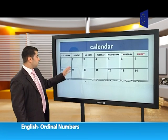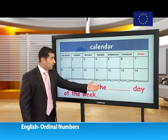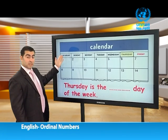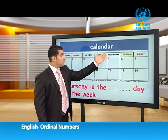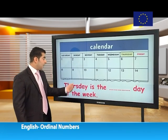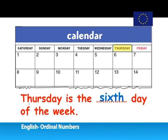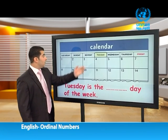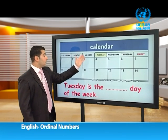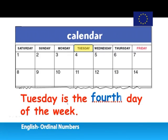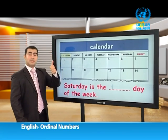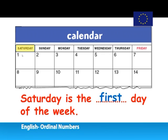Thursday is the sixth day of the week. Saturday is the first, then second, third, fourth, fifth — so Thursday is the sixth day. Tuesday is the fourth day of the week. Saturday is the first day of the week.